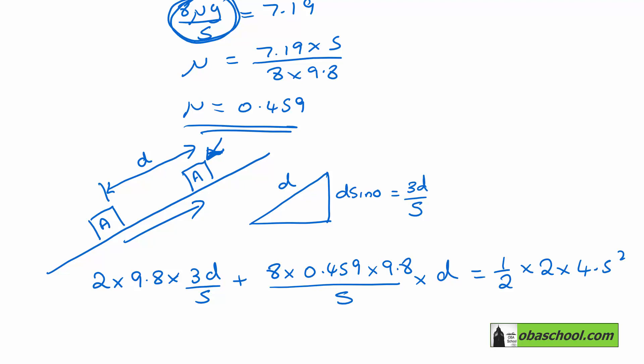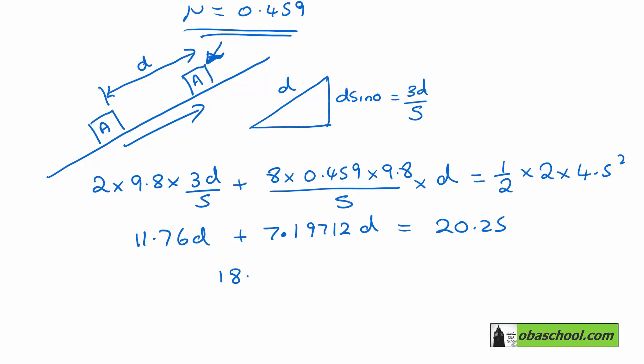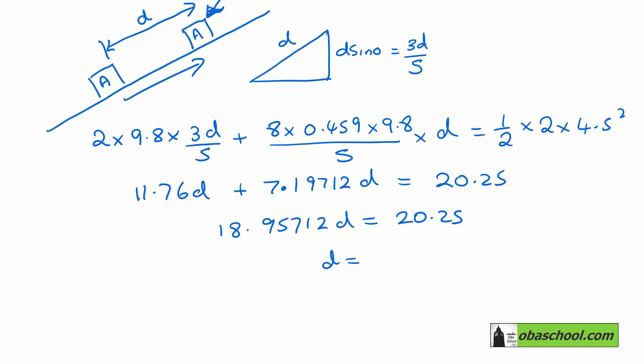We get 11.76D plus 7.19712D is equal to 20.25. So 18.95712D is equal to 20.25, and that gives us D is 20.25 divided by 18.95712 which is 1.07, and that's going to be in metres, correct to three significant figures, 1.06.